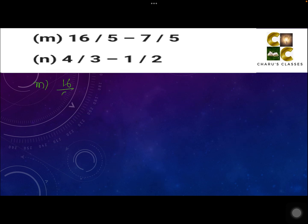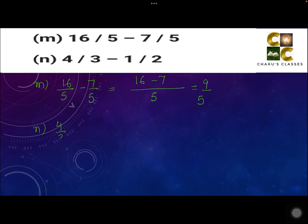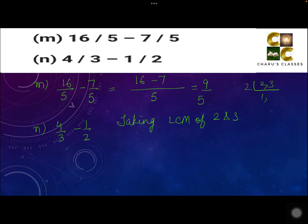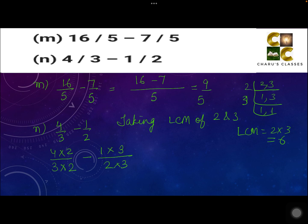Part M: 16 by 5 minus 7 by 5. This is a like fraction, so it's very easy. Writing 5 as the common denominator, 16 minus 7 by 5 gives the answer 9 by 5. Part N: 4 by 3 minus 1 by 2. This is an unlike fraction, so taking the LCM of 2 and 3, which is 6. Multiplying 3 by 2 and 2 by 3 respectively, we get 8 by 6 minus 3 by 6, which equals 5 by 6.